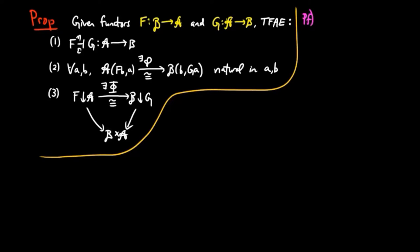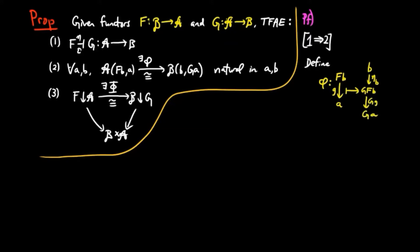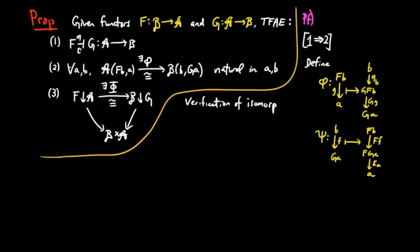Let's first prove that 1 implies 2. We define the set map phi to take an A-morphism G to the composite in B of the unit eta_B followed by G(G). For its inverse psi, we take a B-morphism F to F(F) followed by the co-unit epsilon_A. We can verify these are isomorphisms by naturality of the unit and co-unit and by using the triangle identities of the adjoint situation.